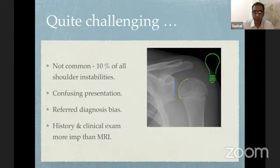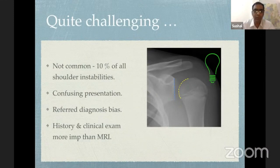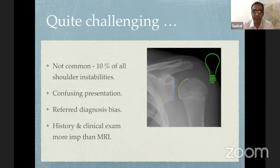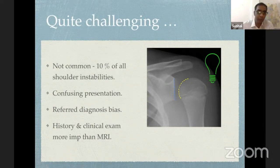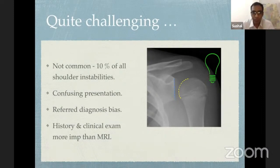Thirdly, there is referred diagnosis — what I call a situation where colleagues or radiologists would have already diagnosed it as impingement, a SLAP tear, or a partial cuff tear. The patient then comes to you because it's very difficult to diagnose posterior instability. You have to eliminate all other diagnoses and finally arrive at that — you're swimming against the current.